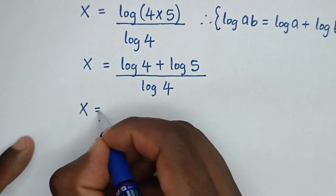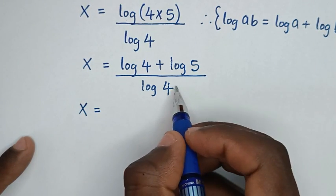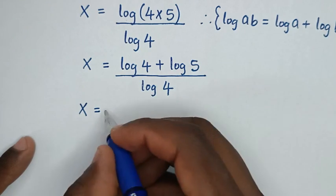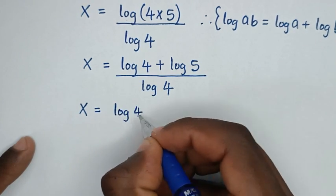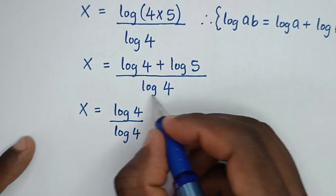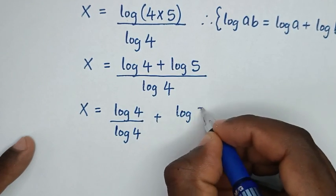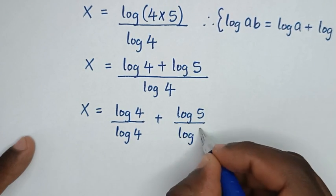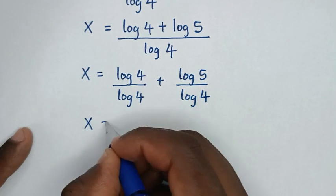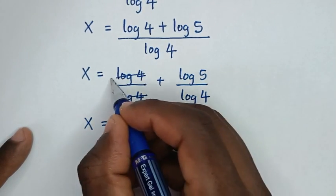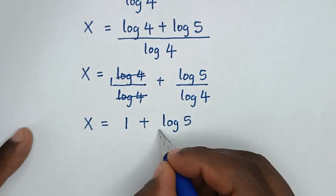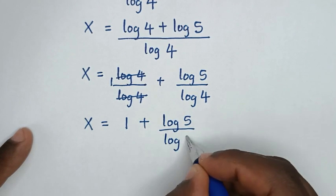Then from here, we divide the denominator log of 4 into each part of the numerator. So it will be log of 4 over log of 4, then plus log of 5 over log of 4. Log of 4 divided by log of 4 is 1, so here it will be 1 plus log of 5 over log of 4.